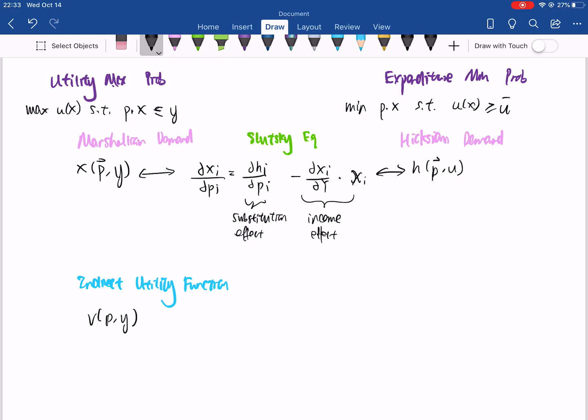The Marshallian demand is related to the indirect utility function by Roy's identity. So Roy's identity tells you that the negative ratio of the partials of the indirect utility function with respect to the price, taking P and Y as inputs, over the derivative of the indirect utility function with respect to Y, is equal to Xi of P Y.